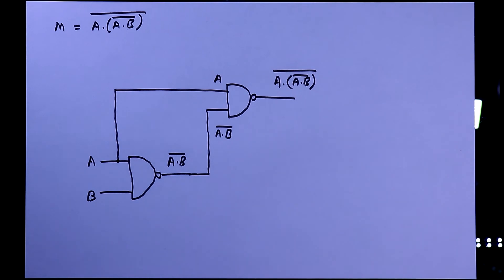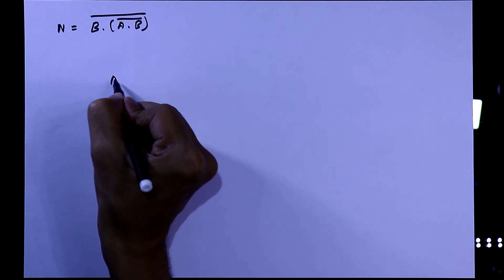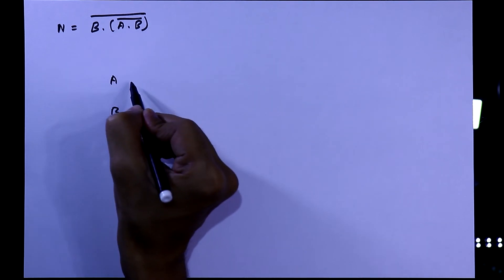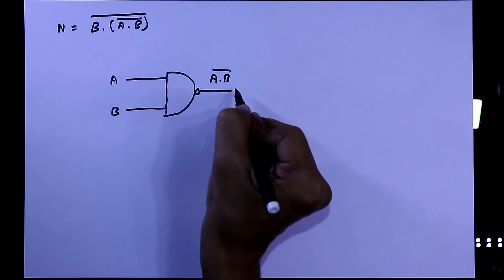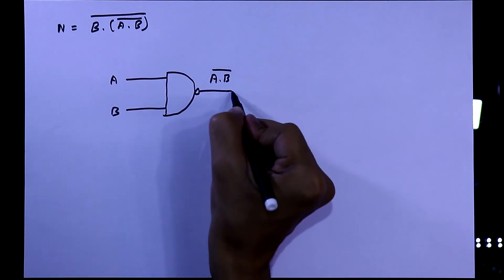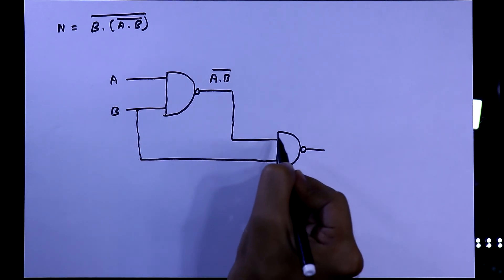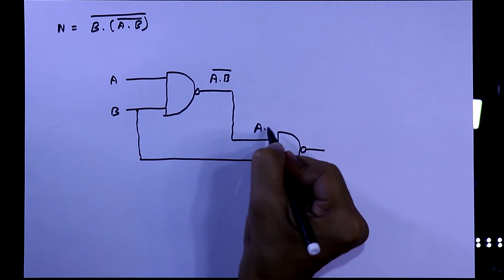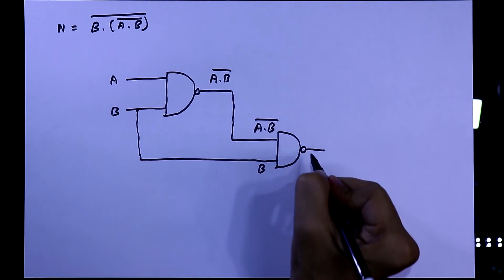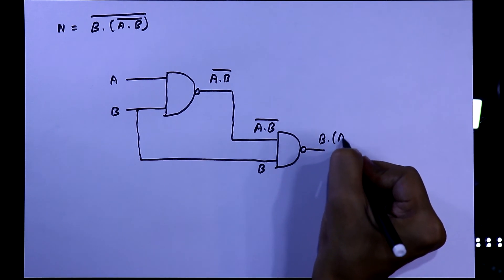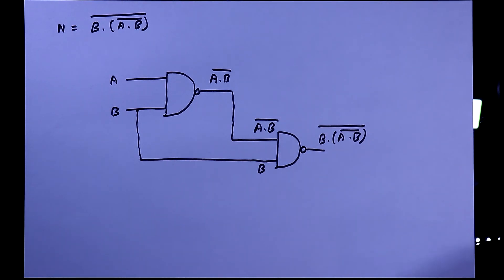Now we'll make the N circuit, again with two inputs A and B. A NAND gate with A and B gives output A dot B-bar. Then for input B, we take another NAND gate where inputs are A dot B-bar and B, giving output B dot (A dot B-bar) whole bar. This is the circuit for M and N.